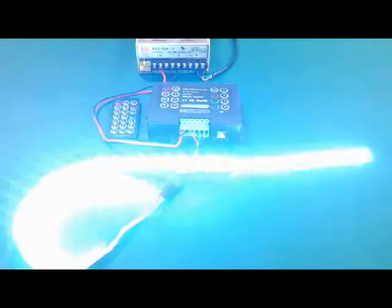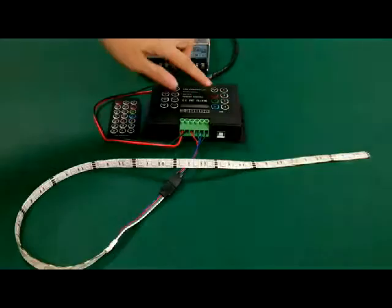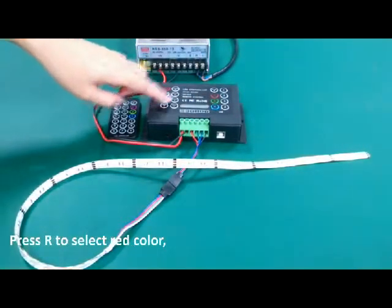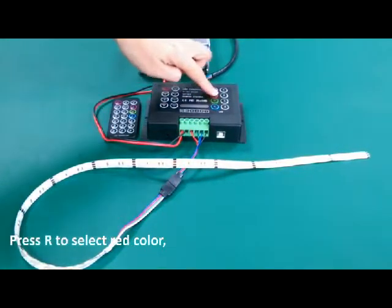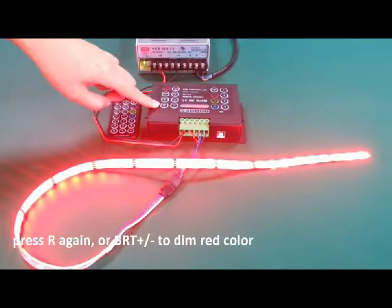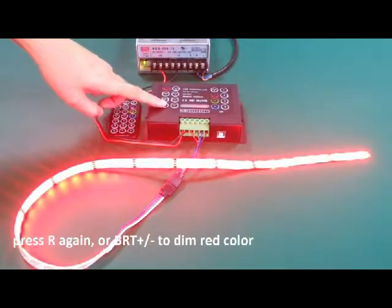Now we adjust the RGB ratio. Press R to add red color or press brightness up.